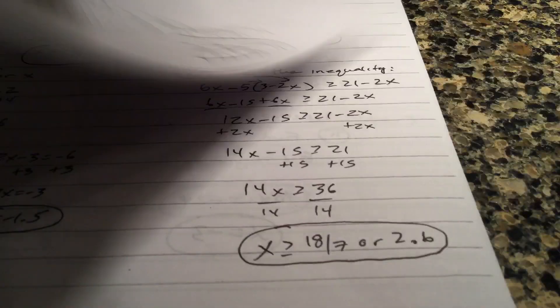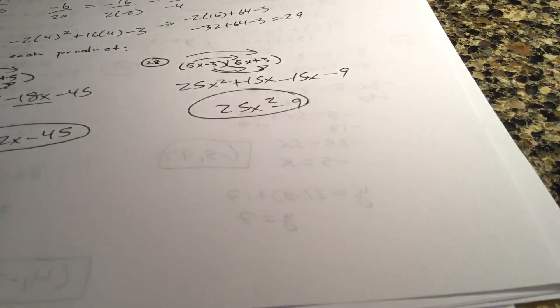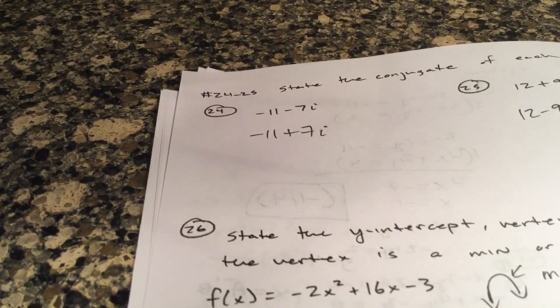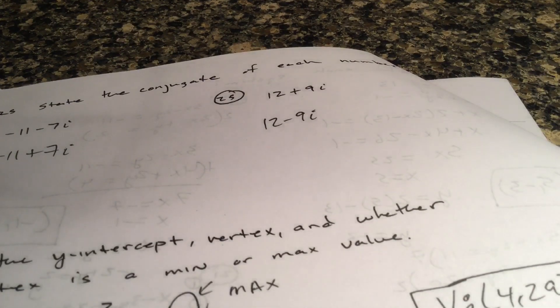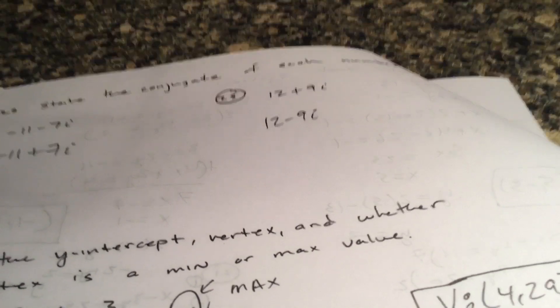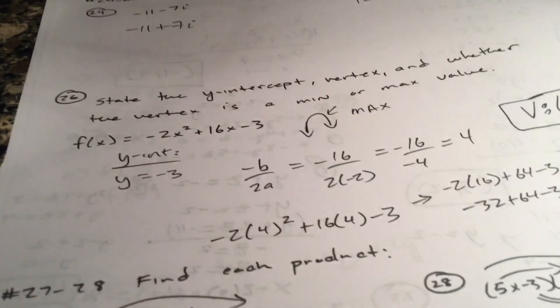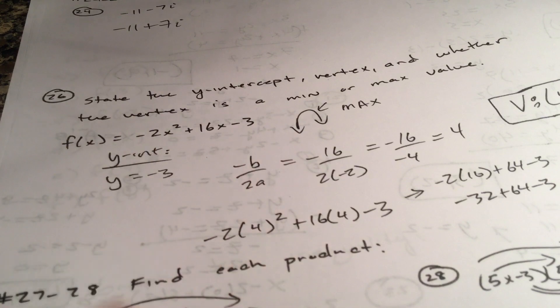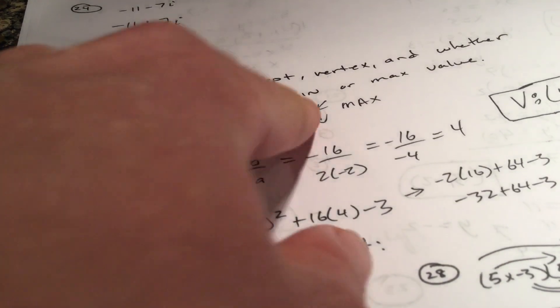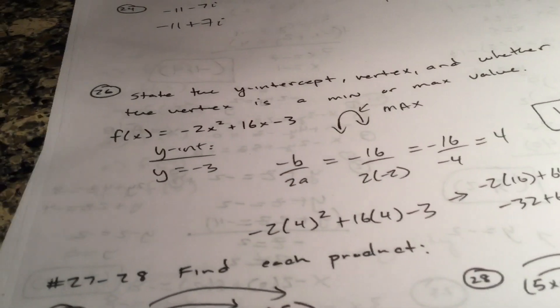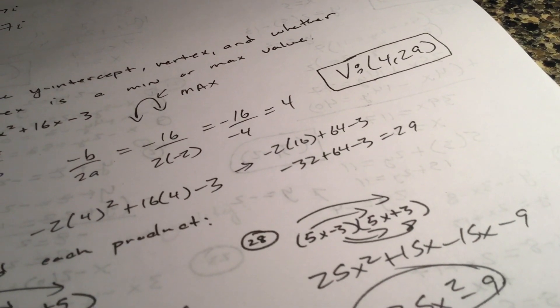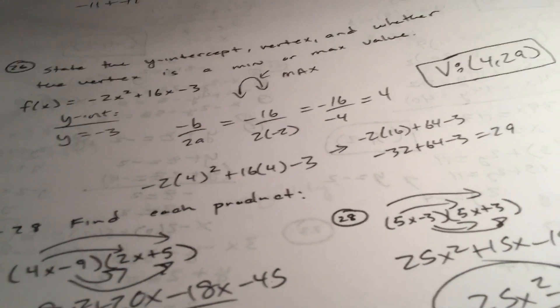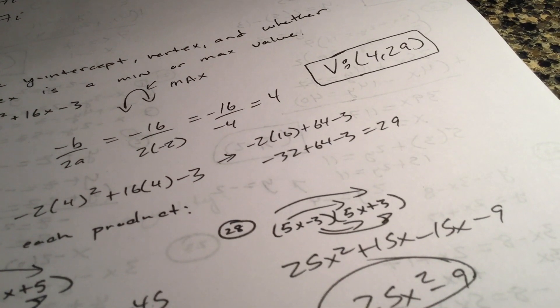All right, I'm going to give you the answers for pretty much the rest of them here. Number 24, conjugates, just literally the opposite sign. The negative 11 stays negative 11, just the sign is the opposite. All right, please don't miss those. 26, the y yourself is staring at you, it is negative three. That's a negative x squared, it makes the igloo, so it has a max, it's all about negative b over 2a. You get four for the x value, plug that in for x, and then the y value is 29.